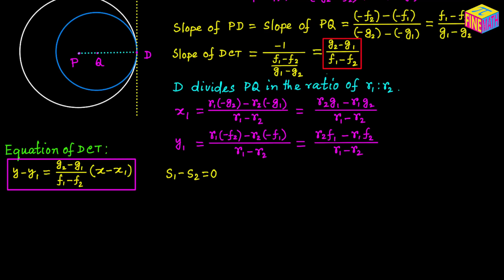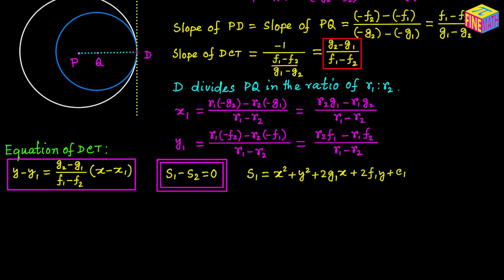S sub 1 is the left-hand side expression of the equation of the first circle and S sub 2 is the left-hand side expression of the equation of the second circle. In a previous video I have done a complete derivation of this formula S sub 1 minus S sub 2 equals 0 for the common tangent — I have provided the link in the description. So we have two different ways of doing it; we can use the first equation or the second equation and in both cases the result will be the same.